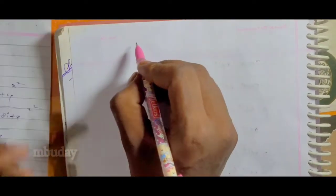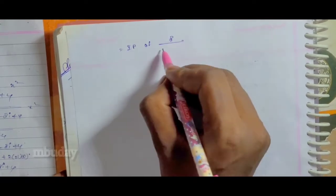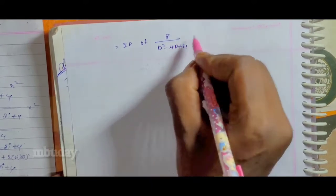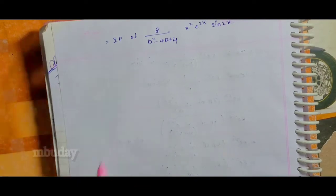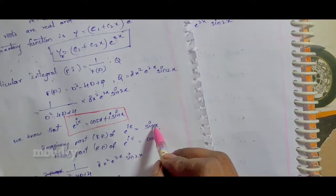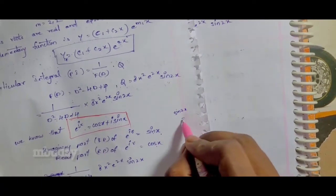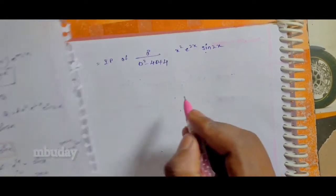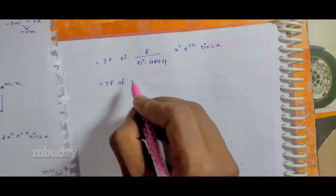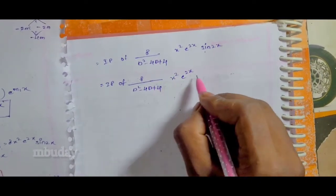We write sin(2x) as the imaginary part of e^(2ix). So the particular integral becomes: IP = imaginary part of [8 / (D² - 4D + 4)] · x² · e^(2x) · e^(2ix).